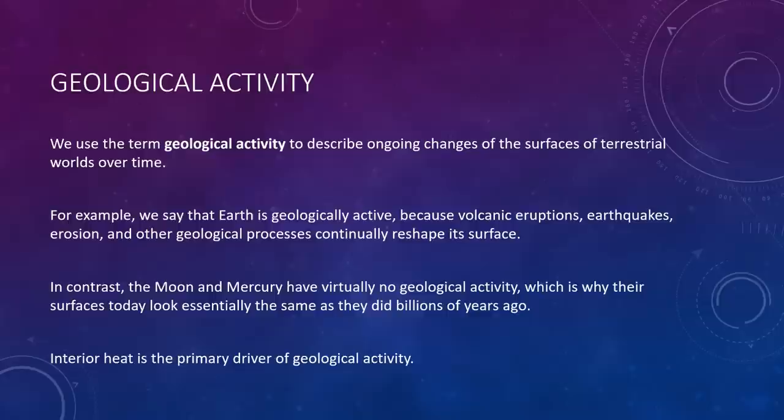The most interesting aspects of planetary geology are those that cause the surfaces of the terrestrial worlds to change with time. We use the term geological activity to describe ongoing changes. For example, we say the Earth is geologically active because volcanoes, earthquakes, erosion, and other geological processes are continually reshaping its surface. In contrast, the Moon and Mercury have virtually no geological activity, which is why their surfaces today look essentially the same as they did billions of years ago.